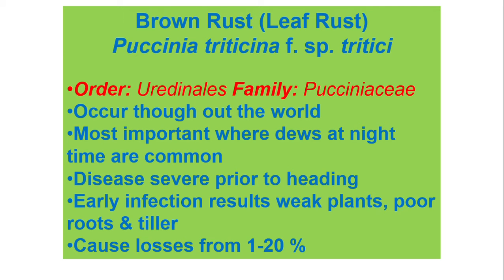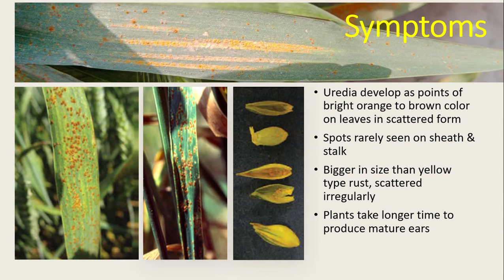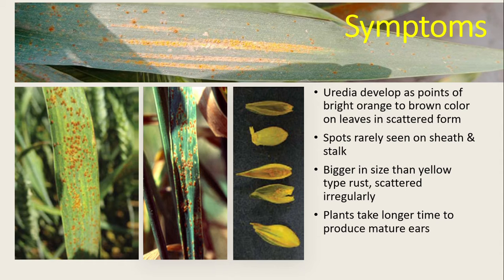Losses of one to twenty percent occur due to brown rust of wheat. Here you can see mixed symptoms of yellow rust and brown rust. Where you see brown colored spots or lines, these are uredinia which are brown in color. Yellow rust shows yellow colored uredinia, as seen here with stripe rust.